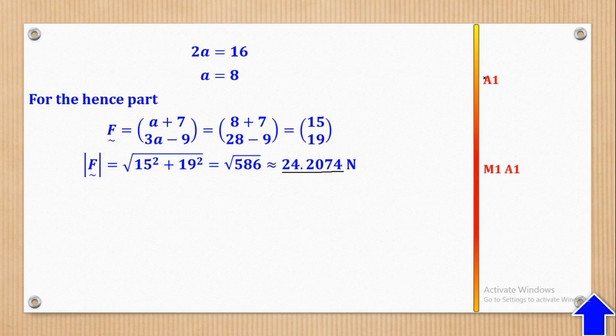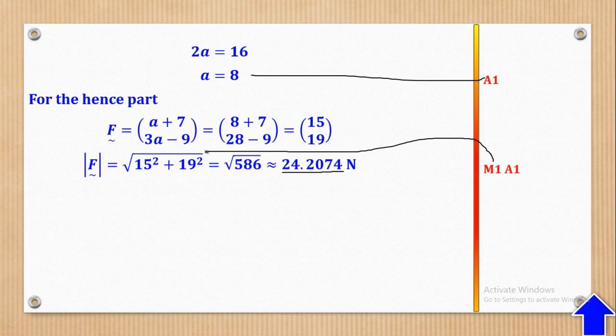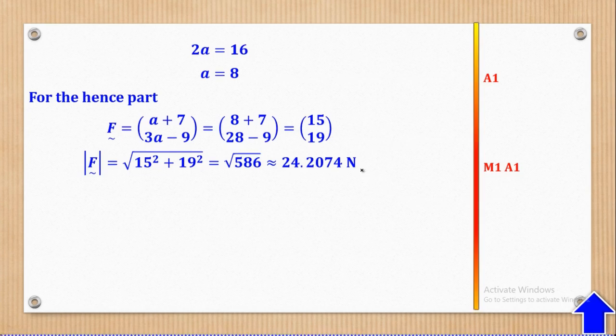A1 is for getting the value of A. M1 is for substituting into Pythagoras' theorem and A1 is for the final output. That's what they wanted.